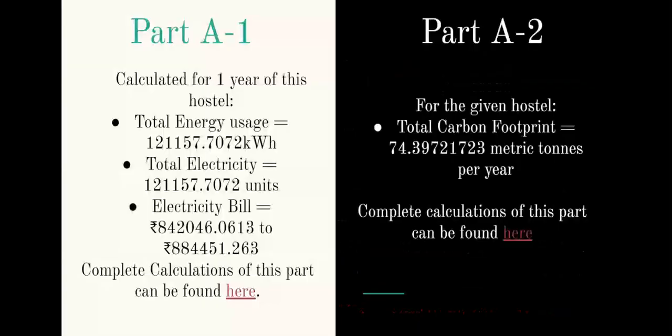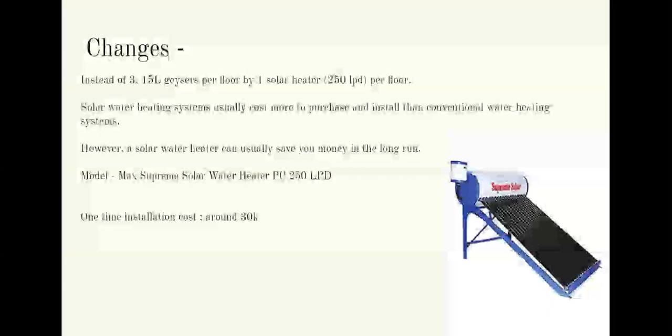This is the overall calculation for Part A1 and Part A2 — the detailed calculations can be checked via the links provided. Moving to Part B, the question was how to minimize the carbon footprint. Carbon footprint can be minimized by considering a number of changes to the system.